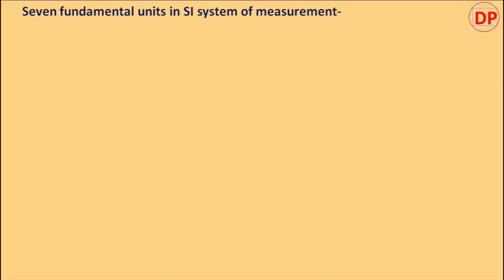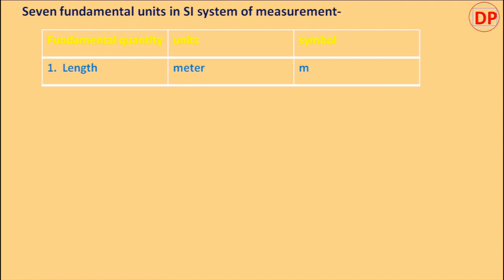Seven fundamental units in SI system of measurement. Fundamental quantities, like length. Unit is meter and represented by symbol M.